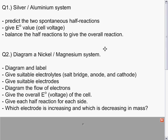Draw, label, diagram the flow of electrons. Give the overall E° value for the cell. Give a half-reaction for each side of the cell at the anode and cathode, and let me know which electrode is increasing and which is decreasing in mass. Pause this, diagram this, and then unpause and check your answer.